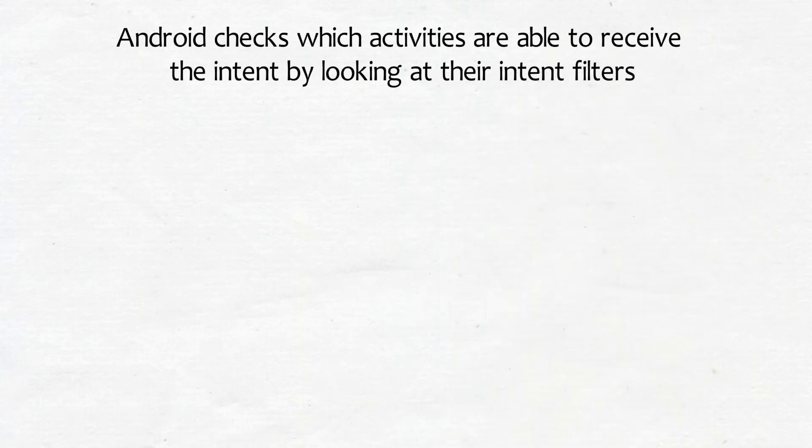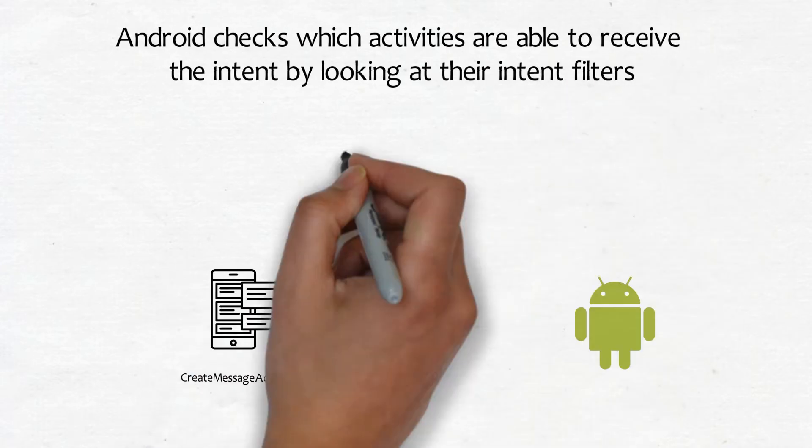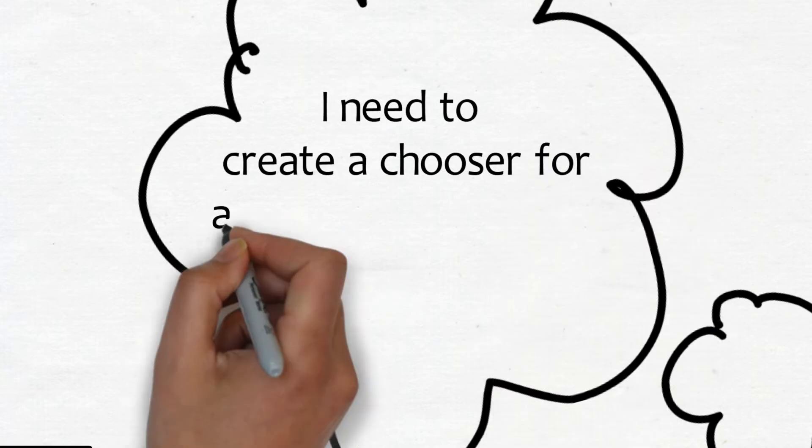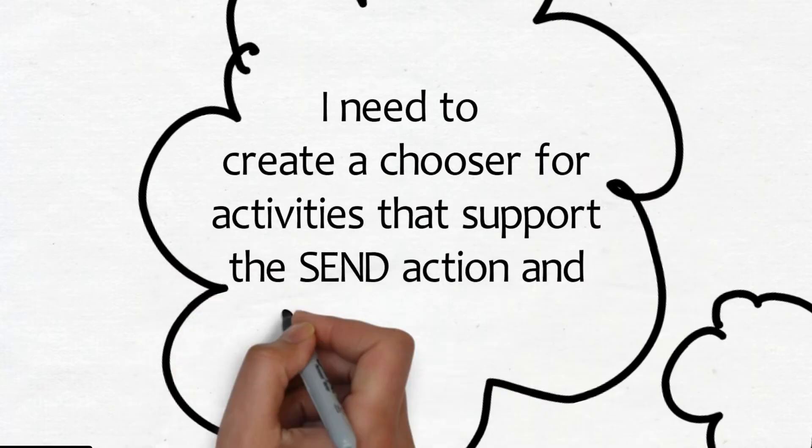Android checks which activities are able to receive the intent by looking at their intent filters. It matches on the actions, type of data and categories they can support.